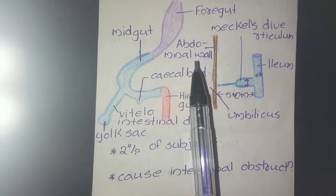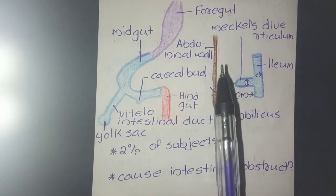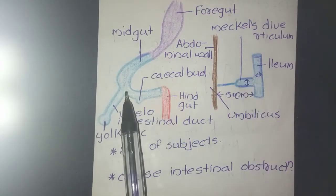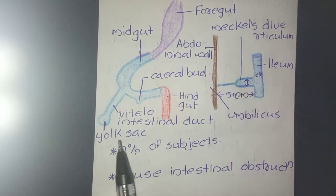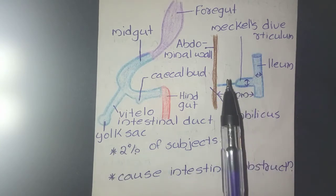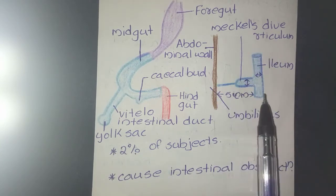Meckel's diverticulum is the persistent proximal part of the vitelo-intestinal duct. It is connected to the umbilicus in the anterior abdominal wall and usually occurs in 2% of subjects and is 5 cm long.